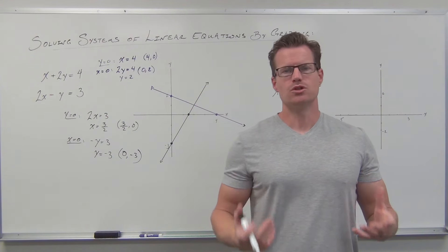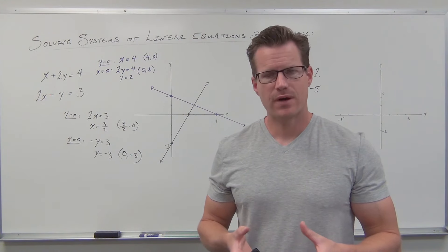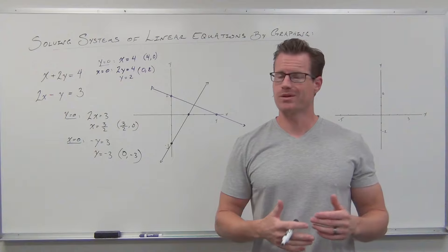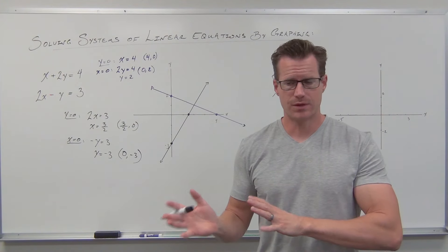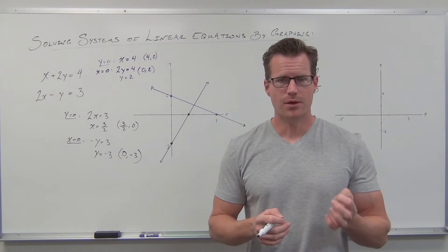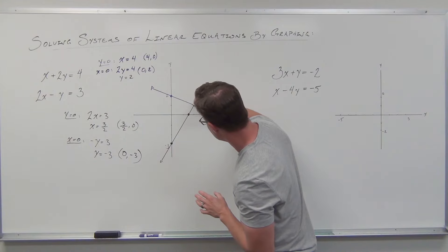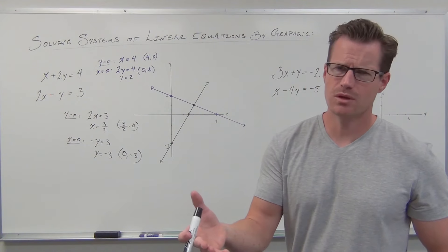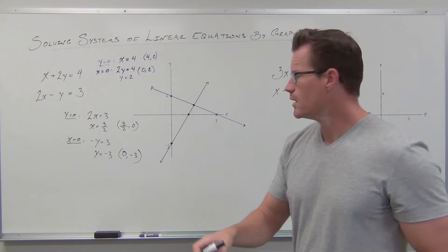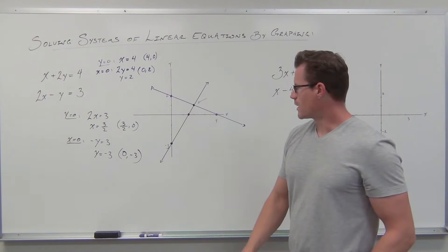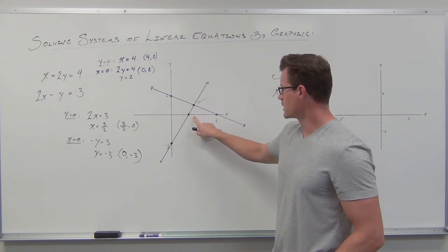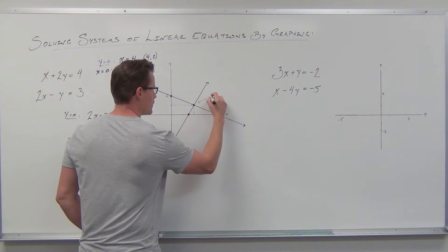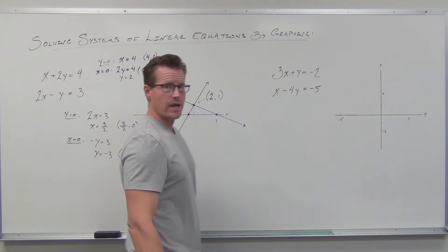If we recall what we're actually doing, we're trying to find the point where these lines intersect. Obviously they do — we've got one line going this way, one line going this way. They're not the same slope, they're not the same line, and they're not parallel. That means they're going to intersect. The point where they intersect — that right there — is what our solution is. Let's find that point. Our x-coordinate looks like it's two, our y-coordinate is one. So that's the point (2, 1).